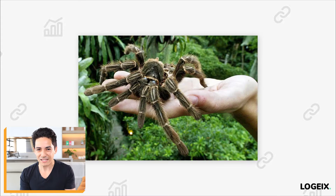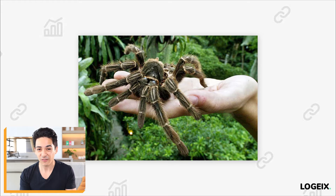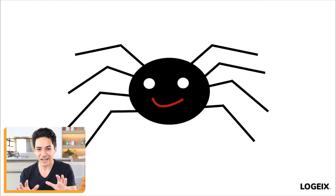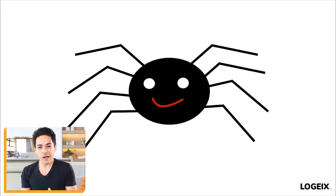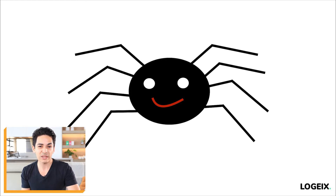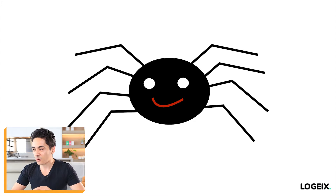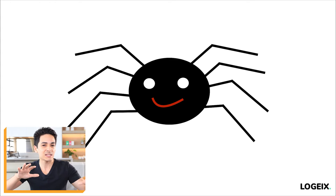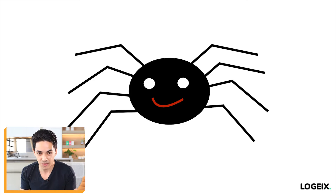Picture a spider for a second — nothing terrifying, just a friendly nice spider like this one right here. What you need to understand at the absolute fundamentals is that Google has a crawler, or you could call it a spider, and what this does is it goes around the web and finds different web pages, of which there are trillions out there.